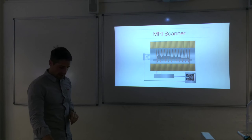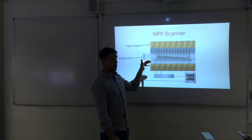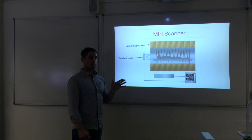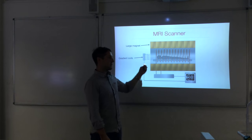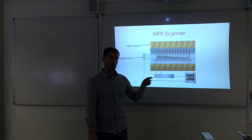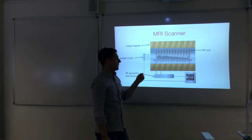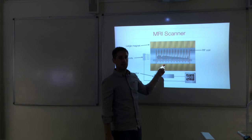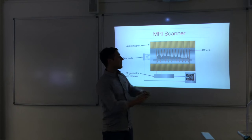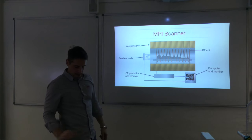An MRI scanner has several components: a large magnet providing the strong uniform magnetic field that the patient is inside; gradient coils that adjust the magnetic field strength throughout the body, varying the Larmor frequency spatially; and a radio frequency coil with generator and receiver that transmits radio photons into the body and receives the signals emitted when nuclei relax. A computer controls everything and the monitor displays the image for the radiologist.